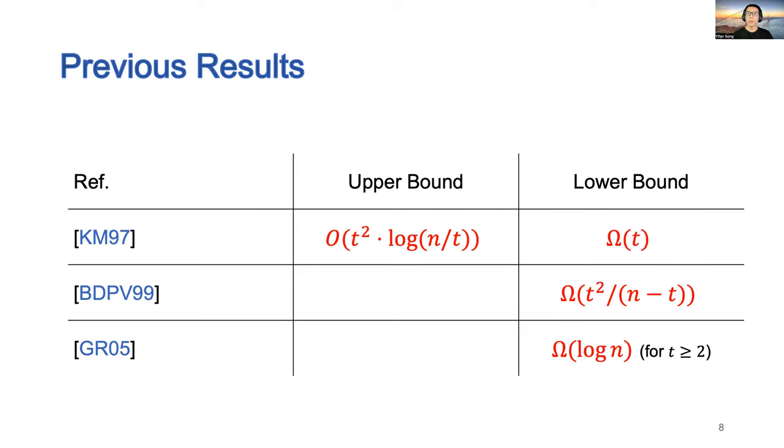The best known result for the upper bound is from KM97, where Kushilevitz and Mansour constructed a protocol with randomness complexity O(t² · log(n/t)) random bits.